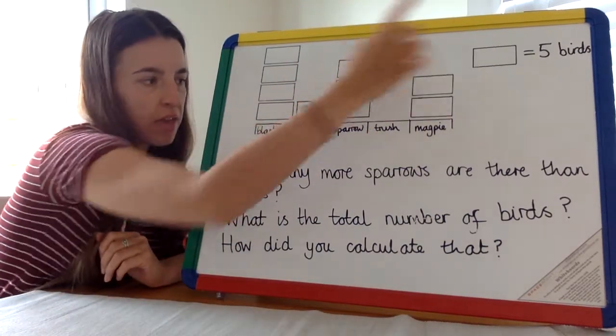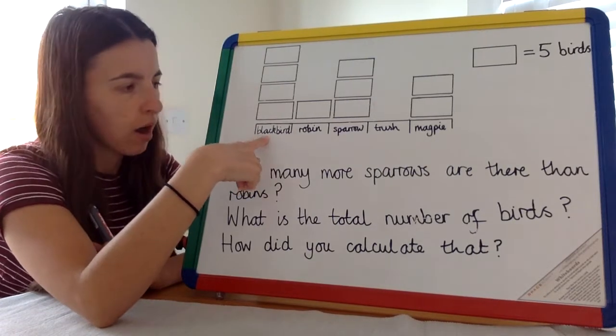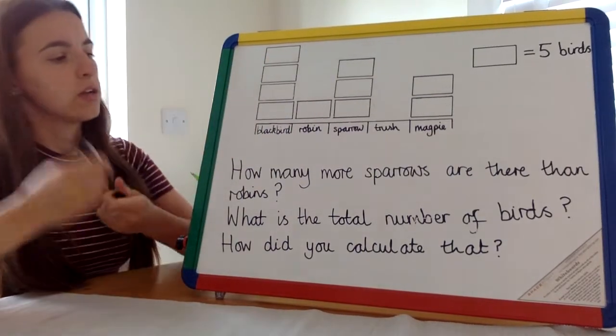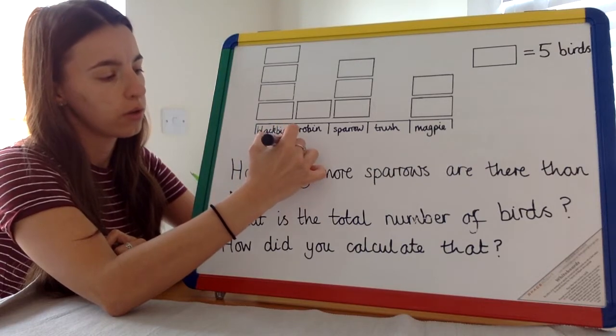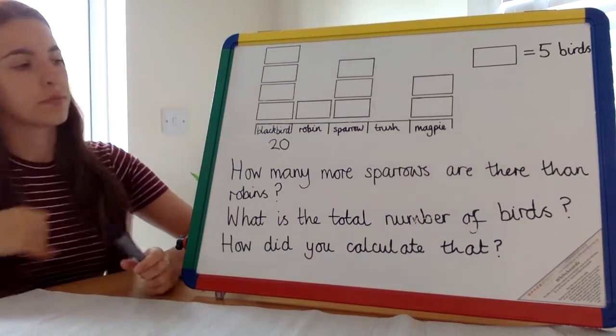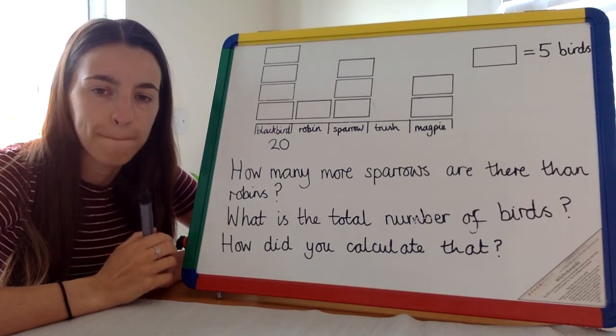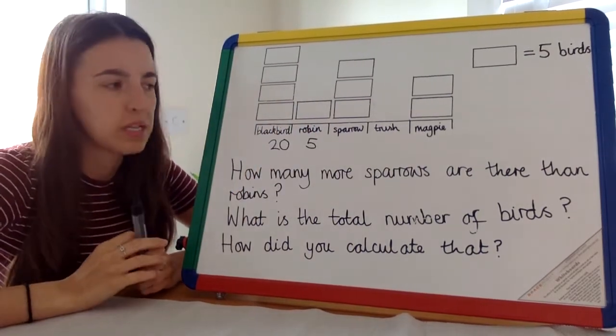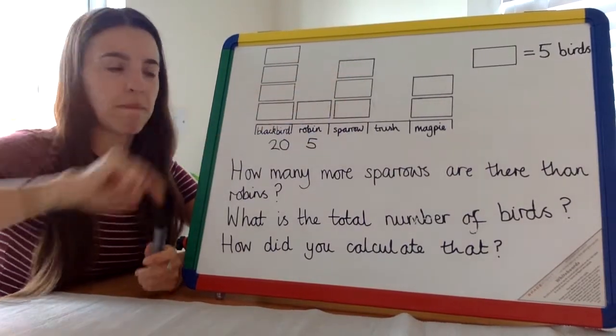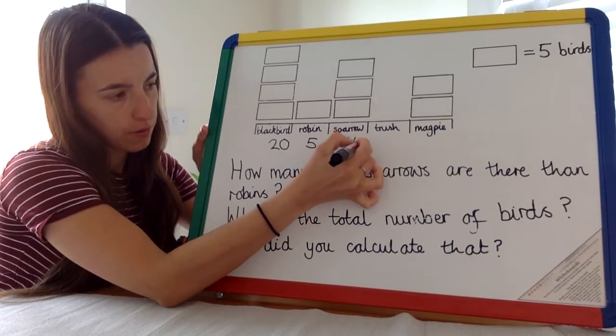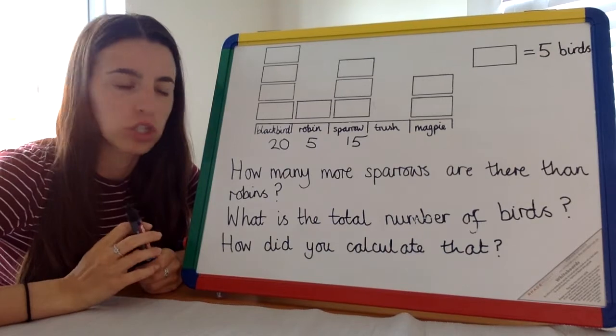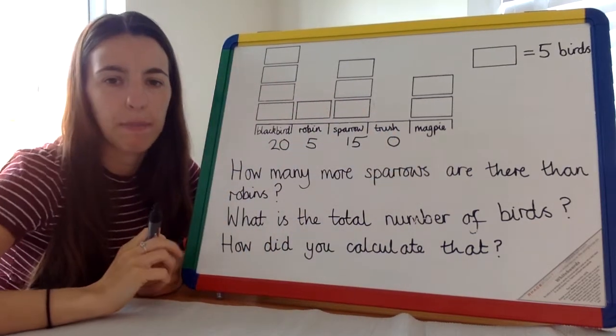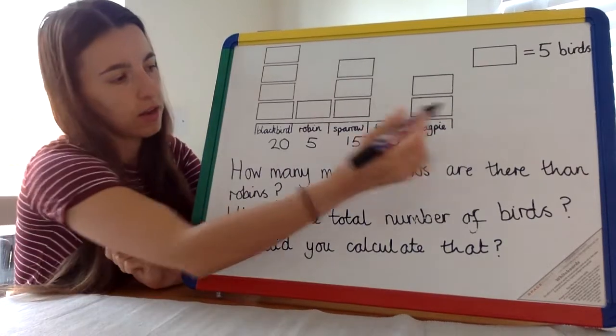If one of these is five, let's see how many blackbirds there are. Using our knowledge of counting fives: this is 5, 10, 15, 20. I'm going to write 20 below so I know it's 20. What about robins? How many robins are there? That's it, five. Sparrows? How many sparrows? Fantastic, 15. What about thrush? How many thrush birds are there? That's it, zero. And lastly, how many magpies? Five, ten, excellent.